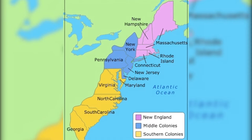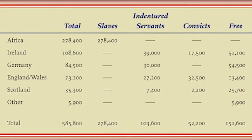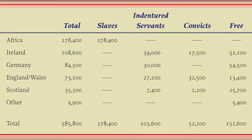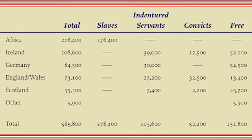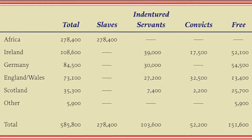Most immigrants to the colonies were from England during the early period. But over time, immigrants began coming to America from other European countries.